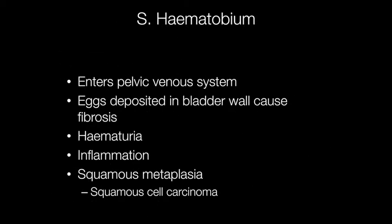In the Haematobium species of Schistosomiasis, the worms enter the pelvic venous system. The eggs are deposited in the bladder wall and cause fibrosis. This results in haematuria and inflammation and eventually squamous metaplasia, which can develop into squamous cell carcinoma. In fact, in countries where Schistosomiasis is endemic, squamous cell carcinoma is the most common type of bladder cancer.